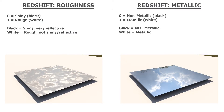Let me break down the basics between different values for roughness and for metallic. When it comes to a roughness texture using a constant value — meaning you're not using a texture but a value inside the Redshift material — zero means your surface will be very shiny and very reflective. One means it's going to be very rough, dull, and not reflective. If you translate that to a grayscale color, zero will be black, so black is shiny. White is the value of one, which is rough and not reflective.